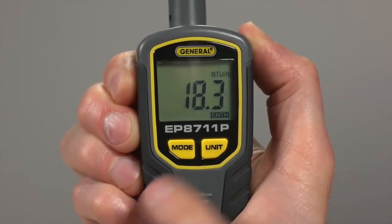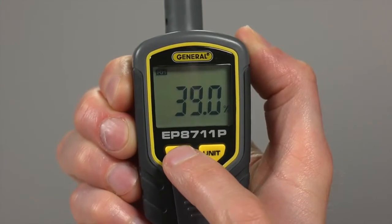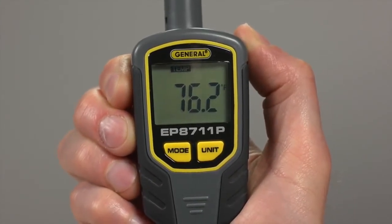For example, one press gives you ambient temperature. Measurements display in imperial units. To switch to metric, press unit.